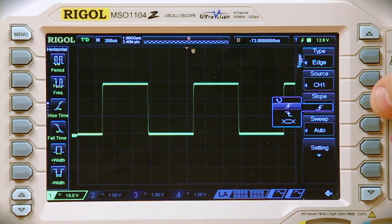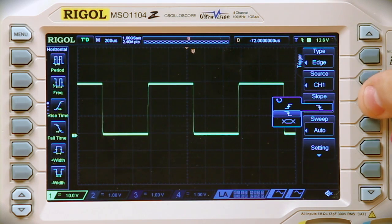I can also go ahead and choose between slope, either rising edge or falling edge, the trigger on, or even both.